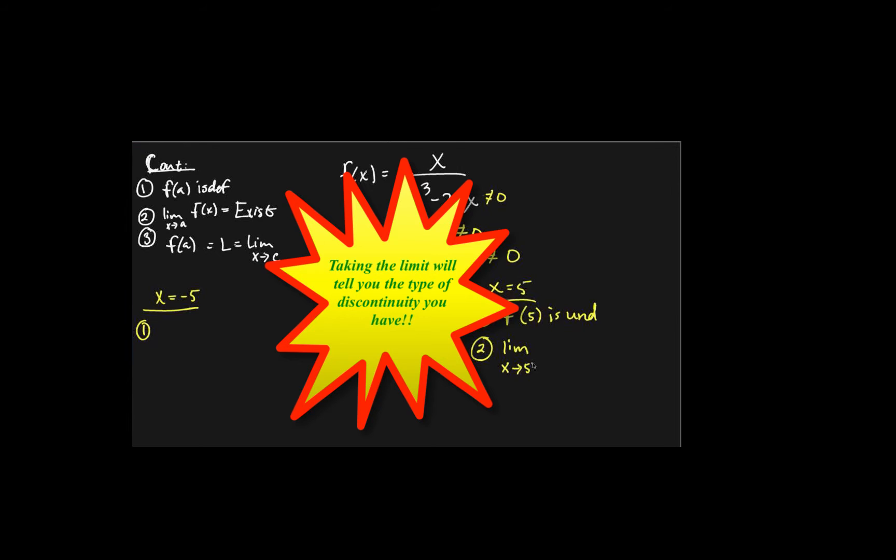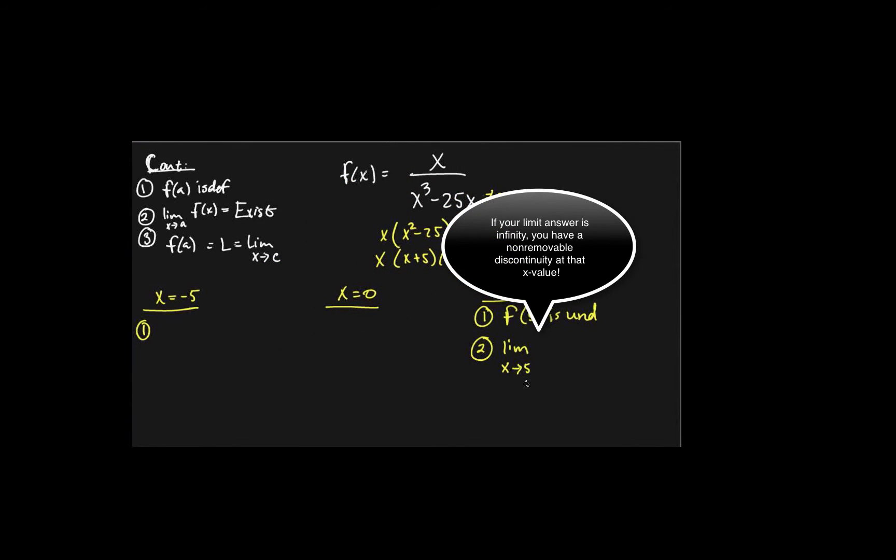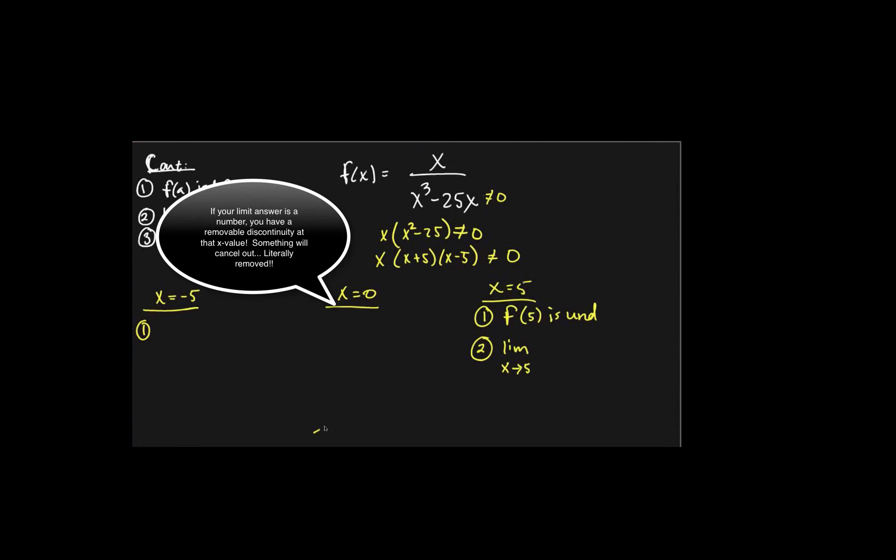We take the limit as x approaches 5, and we get infinity, it's an asymptote, non-removable. We get a number, it's a removable, and one of these open dots.